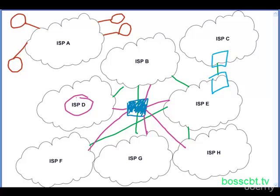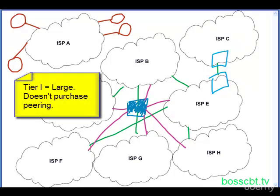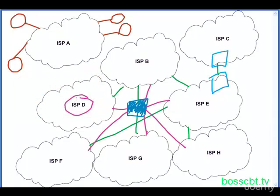ISPs are not all equal — some are really big, some medium, some small. The big ones are often referred to as tier one. What that means is they're so big they can pretty much connect to any other ISP they want to. These definitions are a little murky since no one is really authoritative over who claims what tier — tier one, two, or three — and oftentimes it's more marketing than anything else. But as a rule of thumb, tier ones are the big ones, and they don't really ever have to purchase a peering session. They negotiate it because it's mutually beneficial. Tier ones often sell connectivity to other ISPs — companies like Verizon, AT&T, or Level 3.